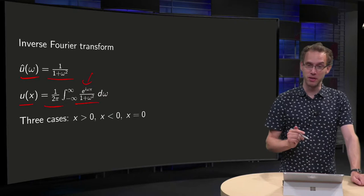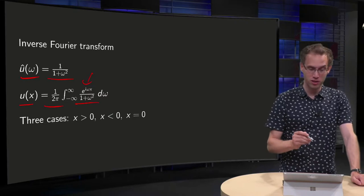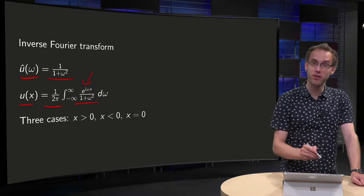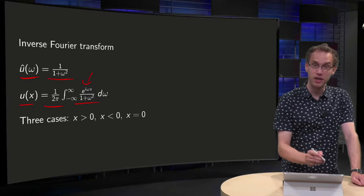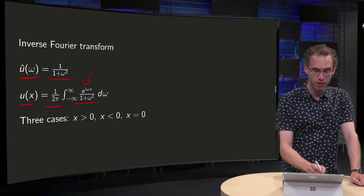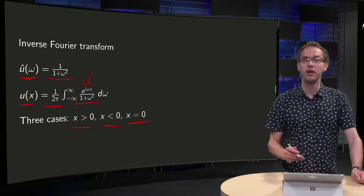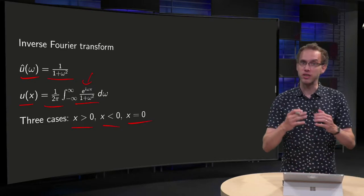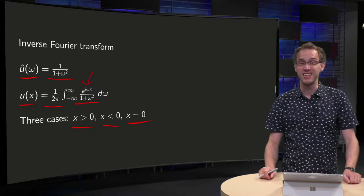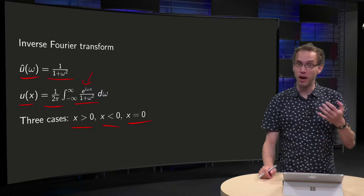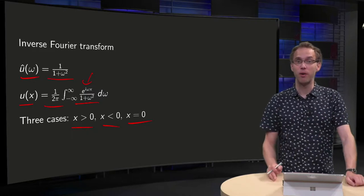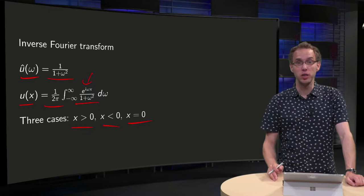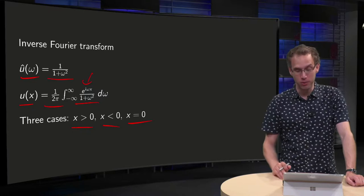We have to be a bit careful — this requires us to consider three cases. Our parameter x is real; it can be positive, negative, or zero, and we have to treat those three separately. You will see why later on when we do the calculation.